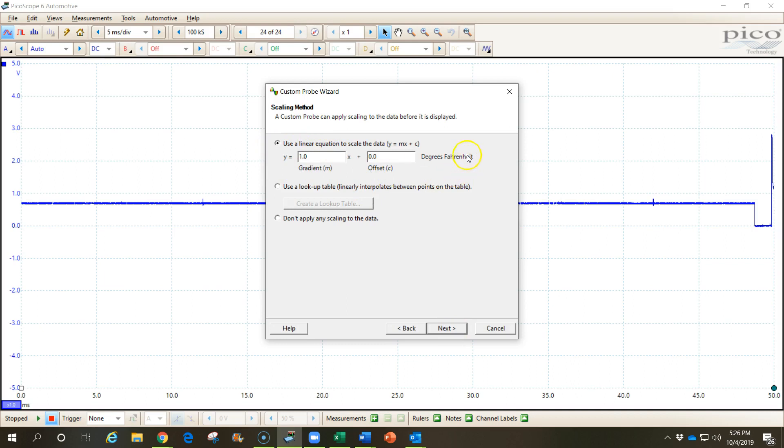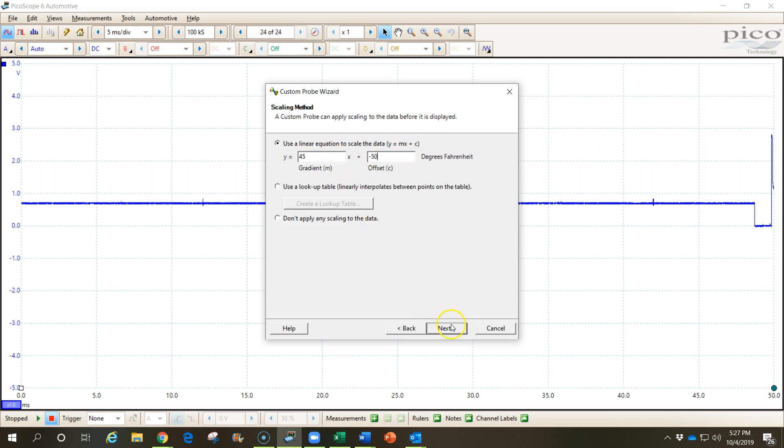And over here is where I need to put in my linear formula. You see we have Y equals MX plus B. Although it calls it C here, it's still the same thing. So we go back to that formula that we just figured out. Y equals 45X minus 50. So I put a negative 50 in right here. I hit next.